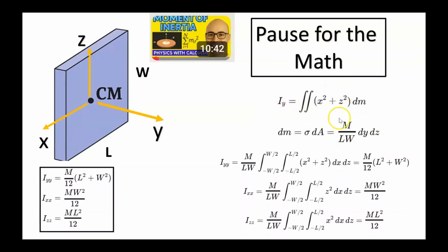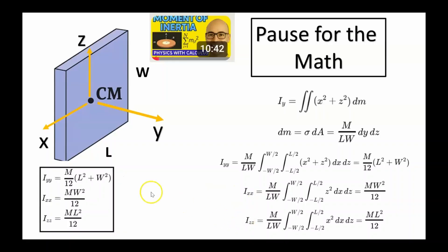I want to briefly remind you how to compute these moment of inertia integrals, which I discussed in detail in a previous video in this playlist. Iyy, the moment of inertia about the y-axis, is given by an integral where dm = σ dA and σ = mass/area. With area = length × width, the integral runs x from −w/2 to +w/2 and z from −l/2 to l/2, yielding m/12 times (l² + w²). The Ixx and Izz integrals are computed similarly, giving the results already seen.